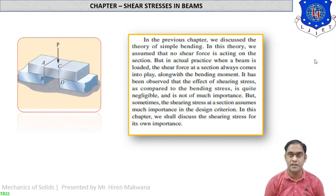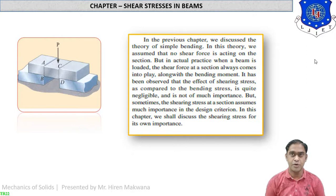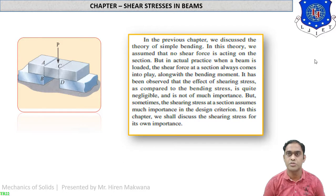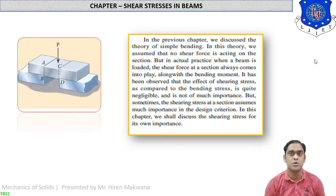For example, railway tracks are of I section, and beams of multistory buildings are subjected to vertical shearing forces. These types of forces are known as shearing forces, which are dangerous for construction. Let us check how to calculate this type of stresses.